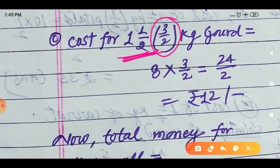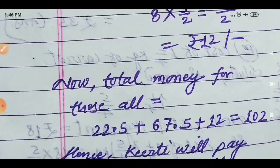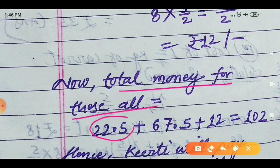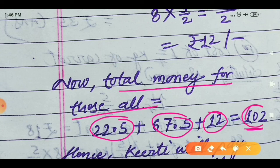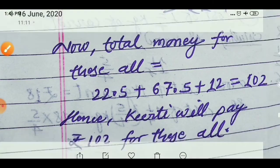For 1 whole 1 upon 2 kilograms of goad, convert to improper fraction: that is 3 upon 2. Cost of 1 kilogram goad is 8 rupees. So cost equals 8 into 3 upon 2 equals 24 upon 2 equals 12 rupees. Total money Kirti will pay equals 22.5 plus 67.5 plus 12 equals 102 rupees. Hence, Kirti will pay 102 rupees to the shopkeeper.